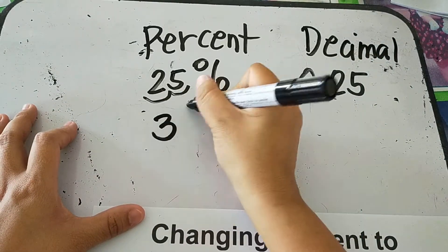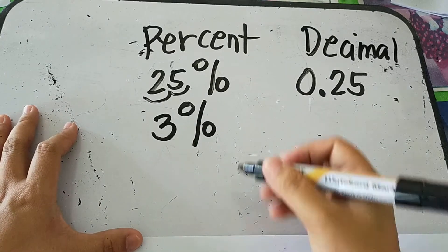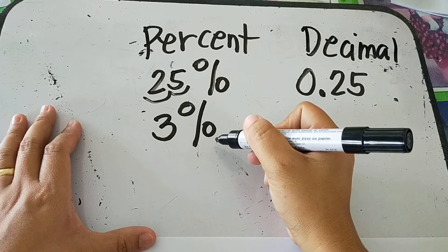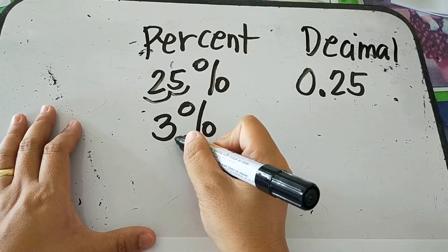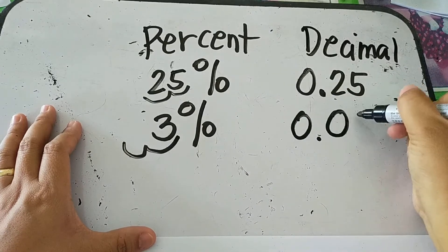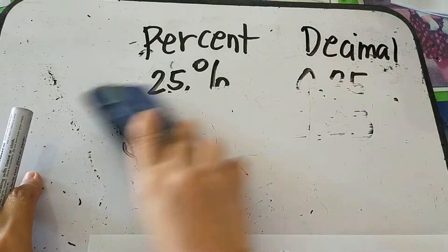How about this one, 3 percent? How are we going to write this in decimal form? So it should be written as, remove the percent form first, and then move the decimal point to the left twice. 1, 2, then the answer is 0.03 or 3 hundredths. Okay, so that's how easy it is.